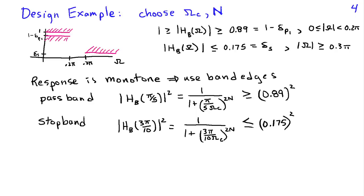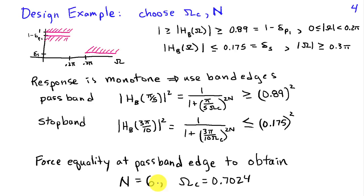Now, you can do some algebra on this, and you end up finding that n equals 6 will work for this particular set of constraints. Furthermore, if I force equality at the pass band using n equals 6, I get that omega c would be 0.7024. Of course, we could also force equality at the stop band, and that would give a slightly different value for omega c in this particular case.